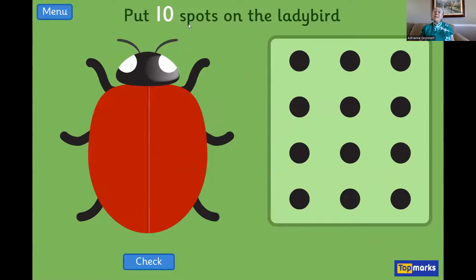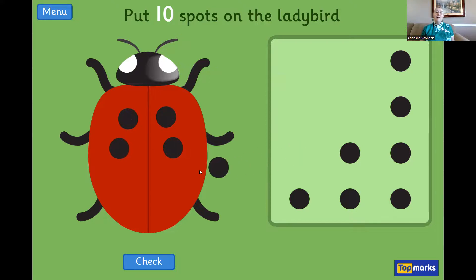So, now, we look at how many spots to put on the ladybug. This time, we need to put ten spots on the ladybug. Can you help me count to ten? Let's do it. One, two, three, four, five, six, seven, eight, nine, and ten. There we go. Do we have ten spots? Yes. And then, we click check.